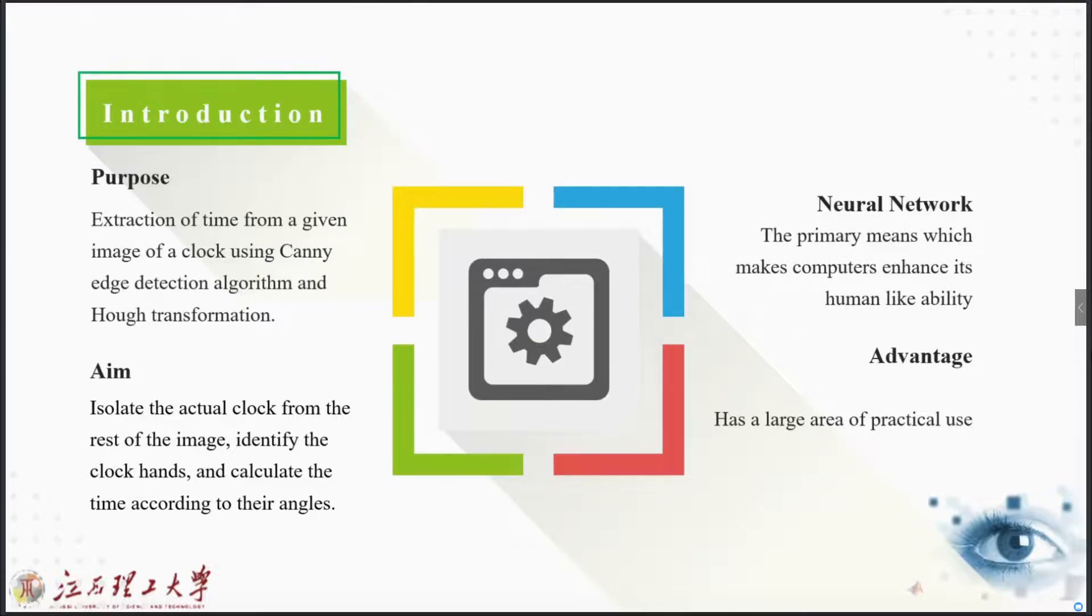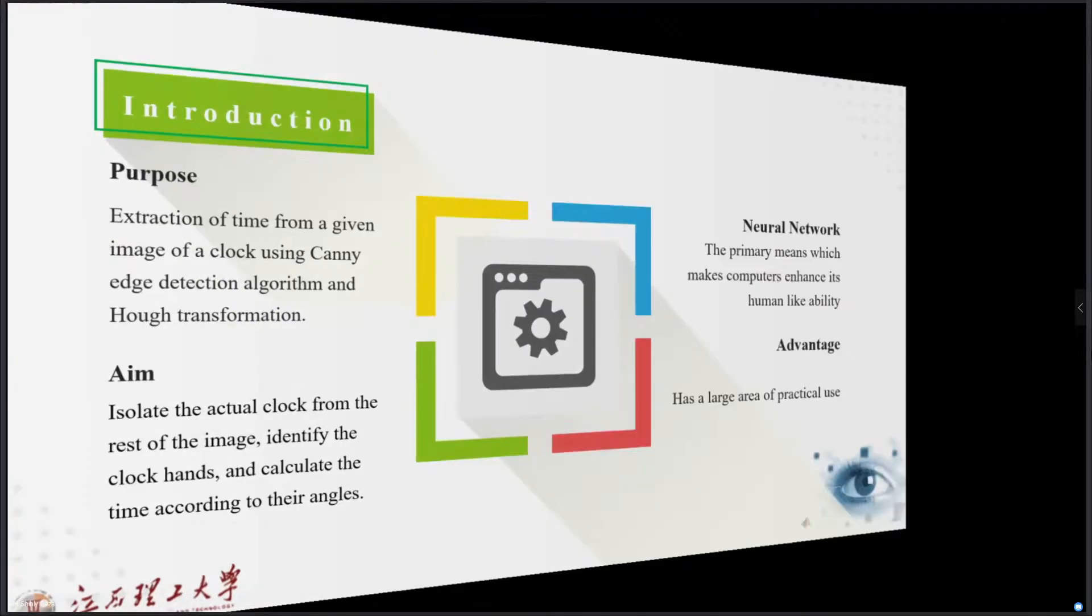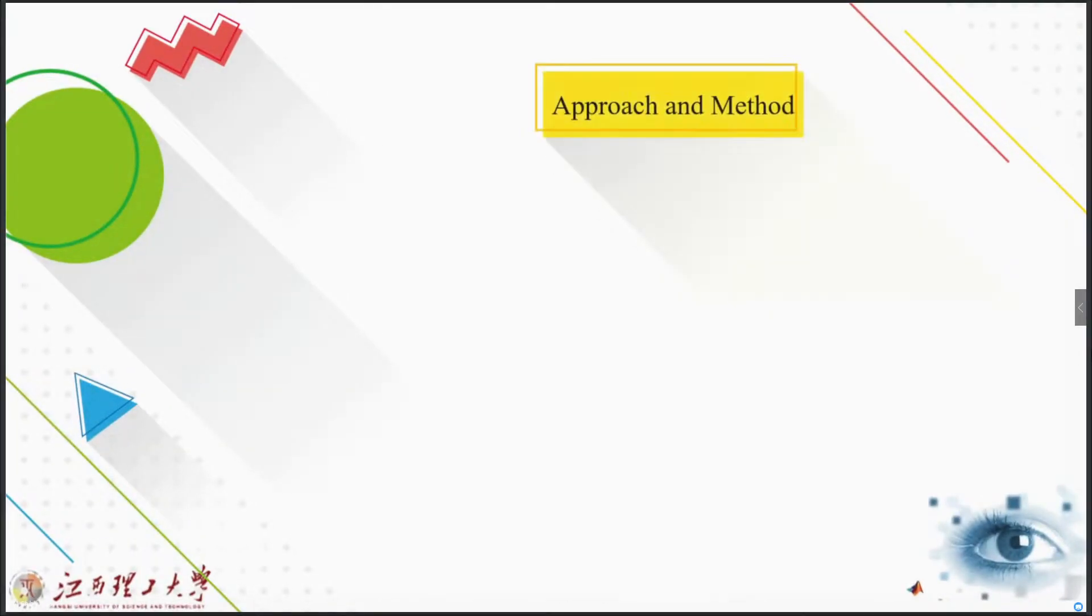The main aim was to isolate the actual clock from the rest of the image, identify the clock hands, and calculate the time according to their angles. This neural network, this project can give the computer enhanced human-like ability.